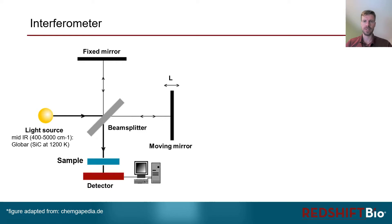Mid-infrared FTIR spectrometers typically use glow bars as a light source which can cover the entire mid-IR region. Unlike dispersive instruments, FTIR spectrometers are built in the form of an interferometer, shown here on the left-hand side. In such a setup, the light is sent onto a 50% beam splitter, which sends one portion onto a fixed and the other onto a moving mirror.